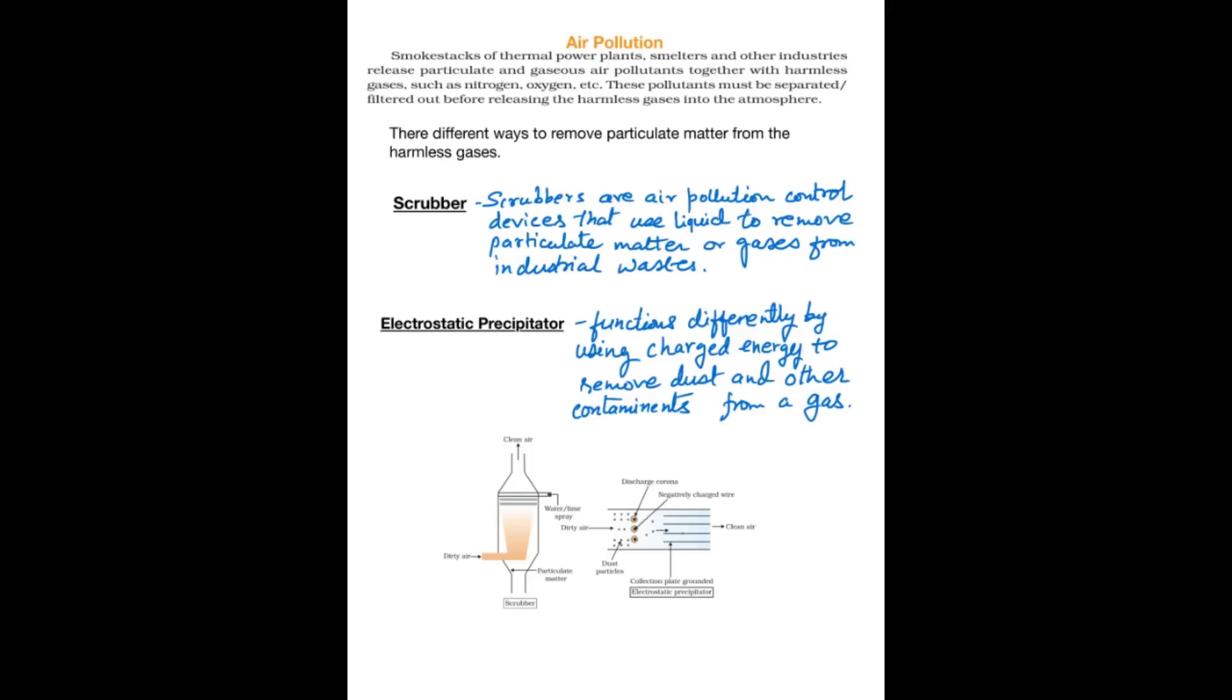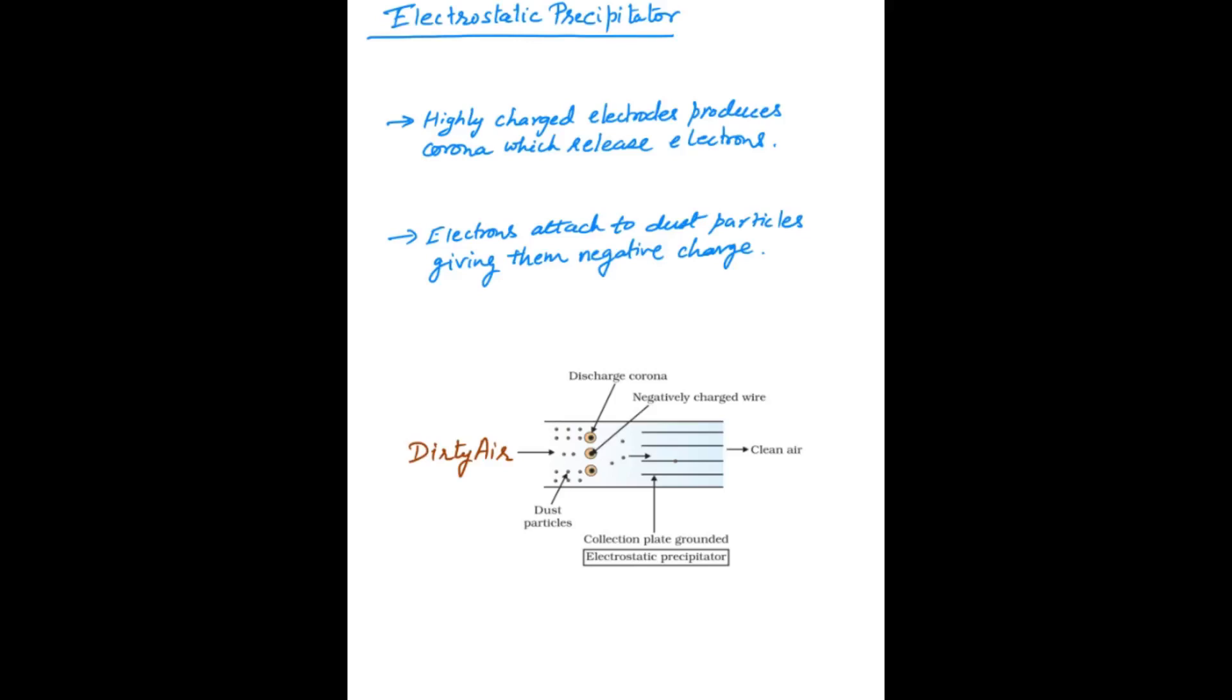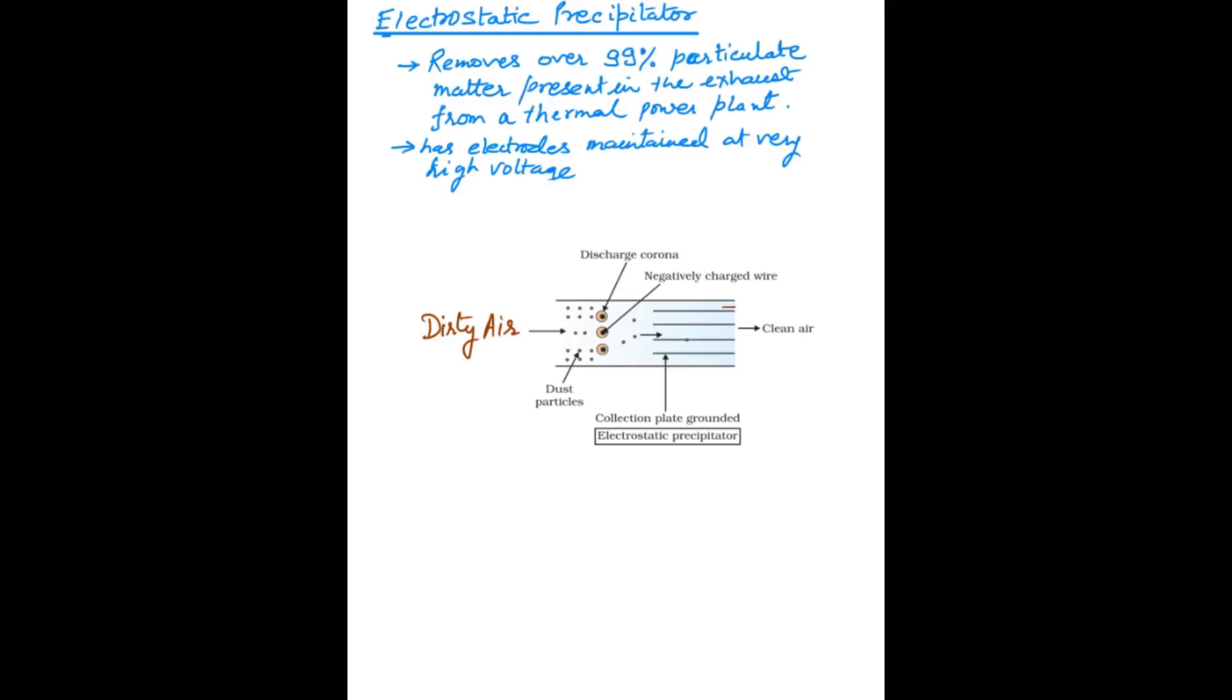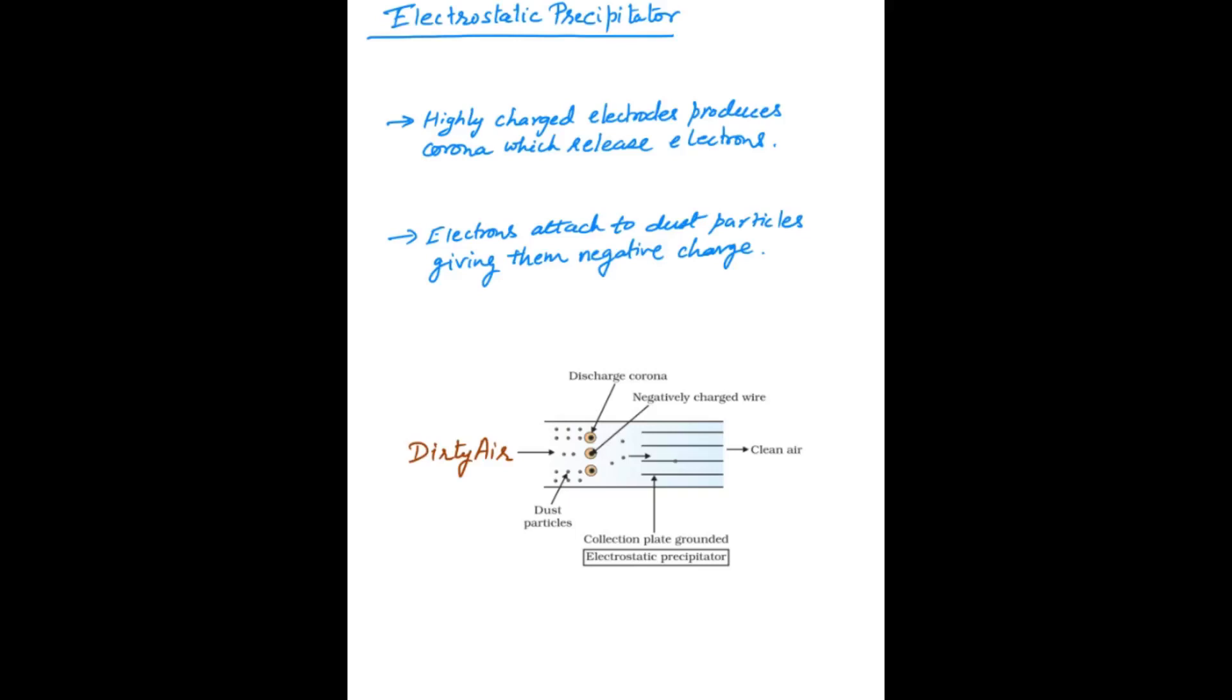Let's understand what is an electrostatic precipitator. Electrostatic precipitator removes over 99% particulate matter present in the exhaust from a thermal power plant. It has electrodes which are maintained at very high voltage. The highly charged electrode produces corona which releases electrons. Due to high voltage, electrons are released in this electrostatic precipitator.